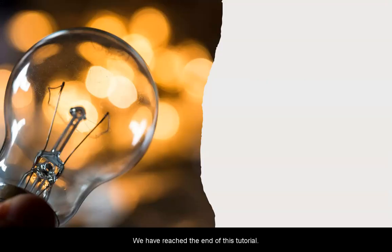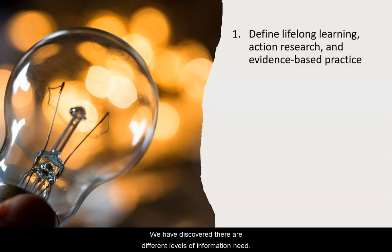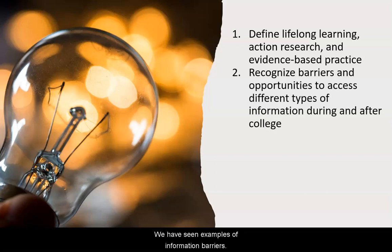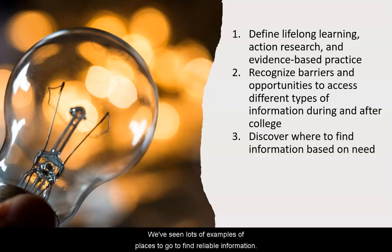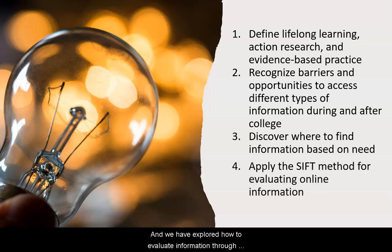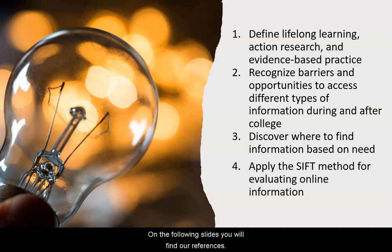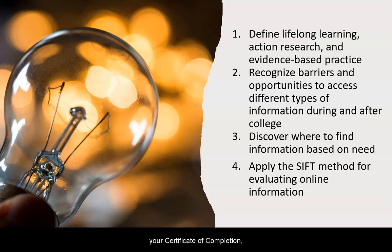We have reached the end of this tutorial. We have discovered there are different levels of information need. We have seen examples of information barriers and lots of examples of places to go to find reliable information. We have explored how to evaluate information through the SIFT method. On the following slides, you will find our references. Please continue through to the last slide to download your certificate of completion if needed. Congratulations!